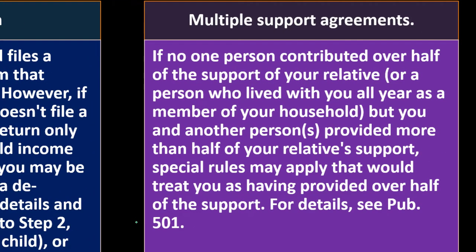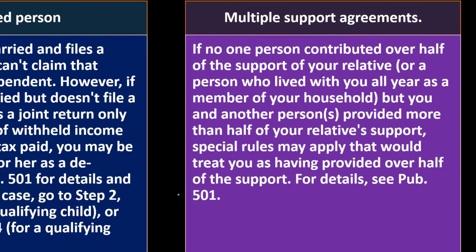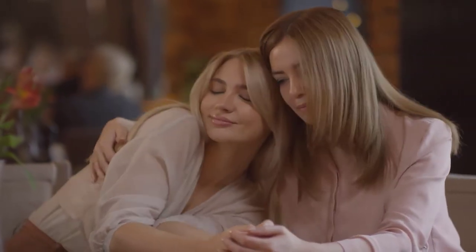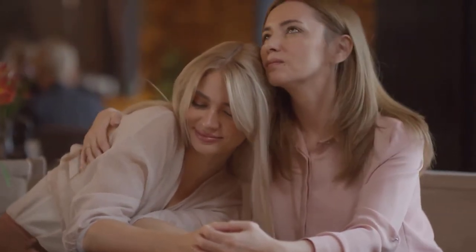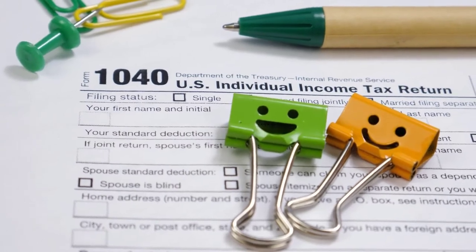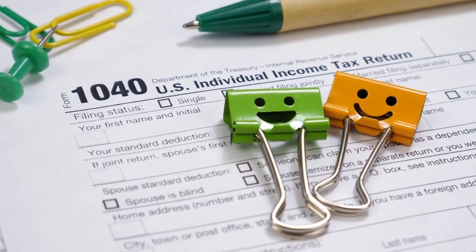Multiple support agreements: if no one person contributed over half of the support of your relative — or a person who lived with you all year as a member of your household — but you and another person together provided more than half of your relative's support, special rules may apply that would treat you as having provided over half of the support. For details see publication 501. Usually over half of the support is the condition, but if multiple people are supporting someone and no one person provided over half, you'd think someone could still claim them as a dependent and get tax benefit. See publication 501, found on the IRS website.